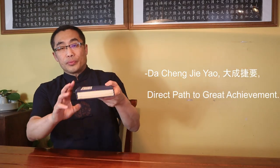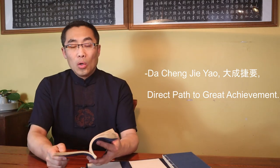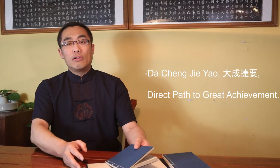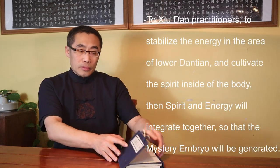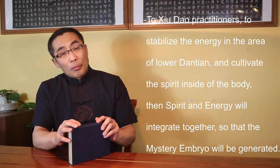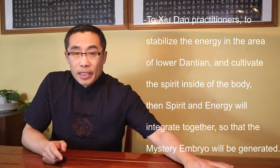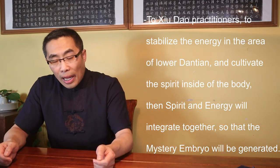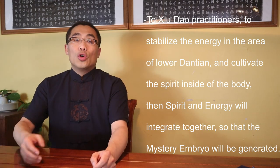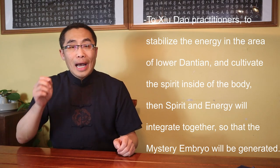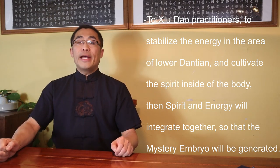the Da Cheng Je Yao or Direct Path to Great Achievement, a classical Xiu Daoist document, contains the quote: Xiu Dao Zhe Chang Fu Qi Qi Qi Yu Qi Xia, Shou Qi Shen Yu Shen Nei, Shen Qi Xiang He, Er Shen Xuantai. End quote. Literal translation: to Xiu Dao practitioners, to stabilize the energy in the lower Dantian area and cultivate the spirit inside of the body. Then, the spirit and energy will integrate together so that the mystery embryo will be generated. End literal translation.